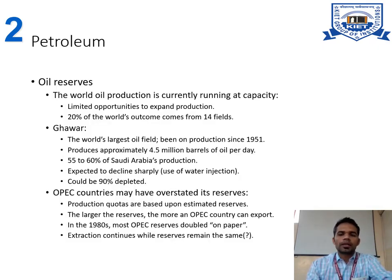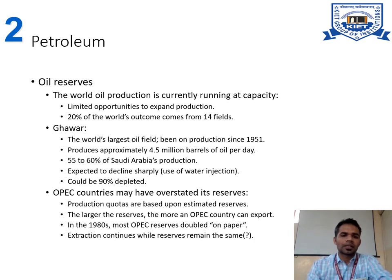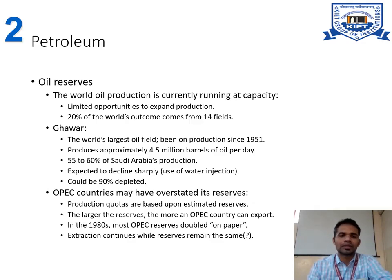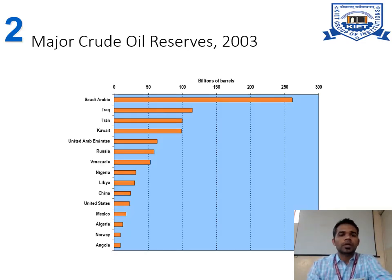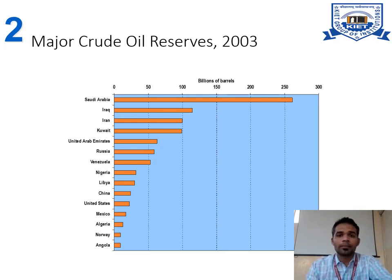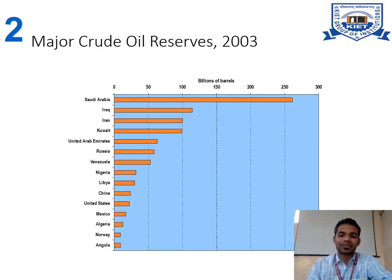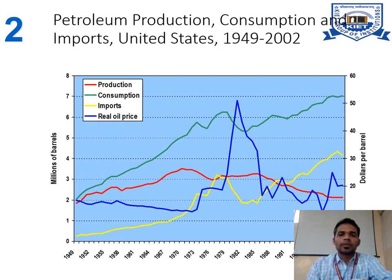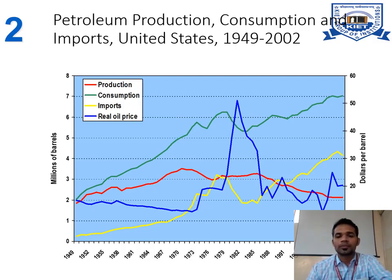Petroleum oil reserves differ across countries. Ghawar and OPEC countries may have overstated their reserves. The major crude oil reserves as of 2003 show Saudi Arabia has the largest, with more than 250 billion barrels. A graph of petroleum production, consumption, and imports in the United States from 1949 to 2002 shows production, consumption, imports, and real oil prices.